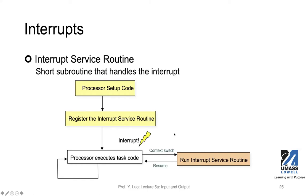Some microprocessors may have multiple interrupts, so it's even more important that you register the correct interrupt for that interrupt service routine. If a microcontroller has only one interrupt, you don't have to differentiate — that's the only ISR you may have. Registering the interrupt service routine is the first step to ensure your interrupt is going to be handled by the correct ISR. Once you do that, you can proceed with your normal task.